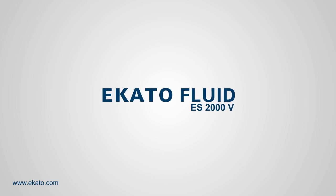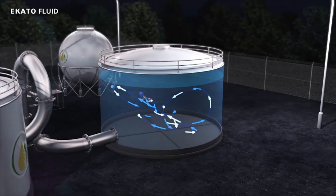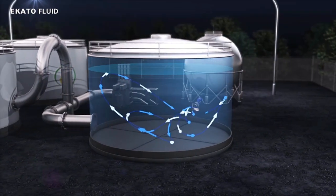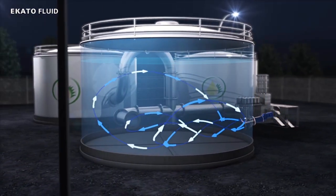The Ekato Fluid Side Entry Agitator ES2000V for effective mixing is available in two sizes with a motor power up to 15 kilowatts to suit any size of storage tank in the edible oil and fats industry.